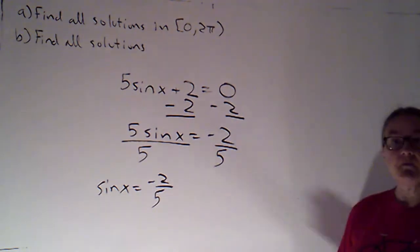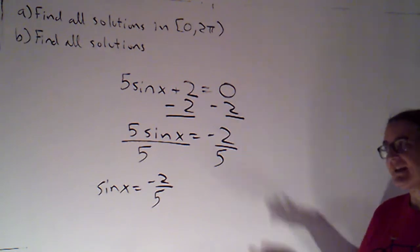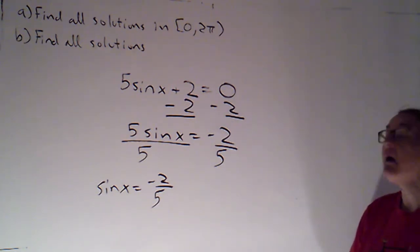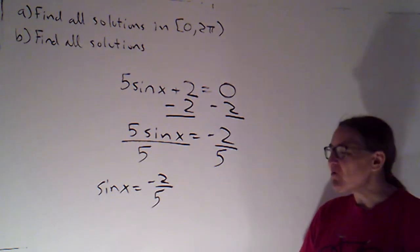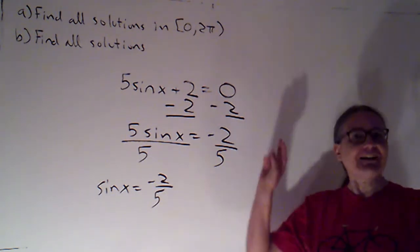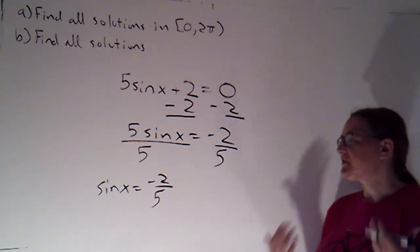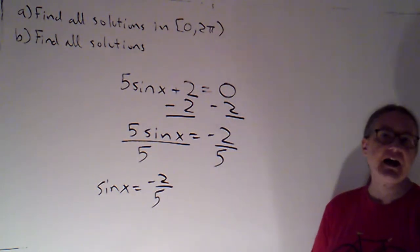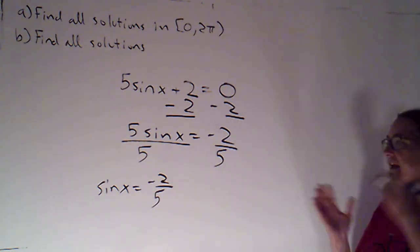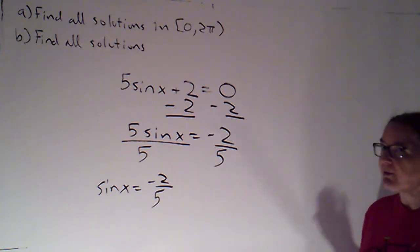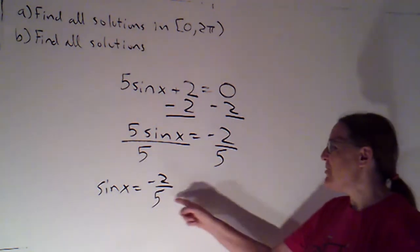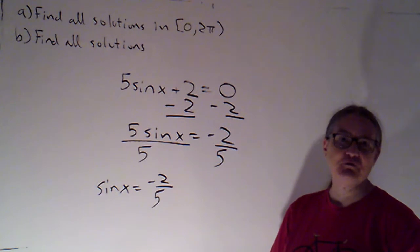Now as long as this is a number between negative 1 and 1, there are solutions, and negative 2 fifths is definitely in the range of sine. But it's not one that has what I call a nice reference angle. So the reference angle isn't going to be π over 6, π over 3, π over 4. If you've memorized the unit circle, you probably have not memorized any points where the y value is negative 2 fifths.